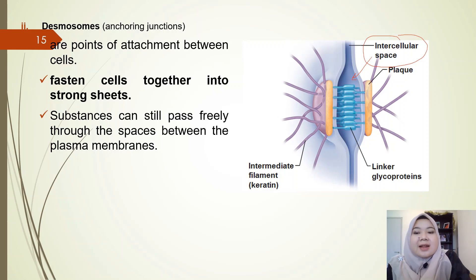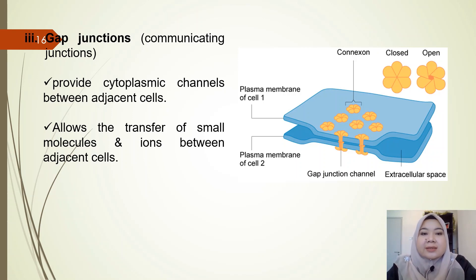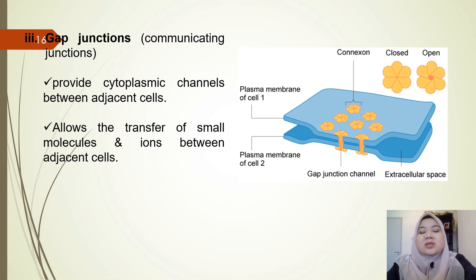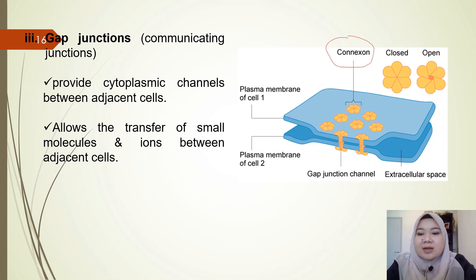Desmosomes also contain linker glycoproteins between cells. The last type of animal cell junction is the gap junction, also known as communicating junctions. Gap junctions provide cytoplasmic channels between adjacent cells, allowing the transfer of small molecules and ions. Gap junctions are very similar in function to plasmodesmata in plant cells — it's just that plasmodesmata are found in plant cells while gap junctions are found in animal cells.